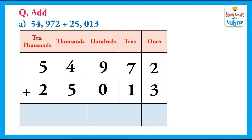So what is the procedure for adding these five-digit numbers? First of all, we will add the ones — we add the digits in the ones column. In the ones column we have 2 and 3, so we add them: 2 plus 3 equals 5. We write 5 in the ones column.